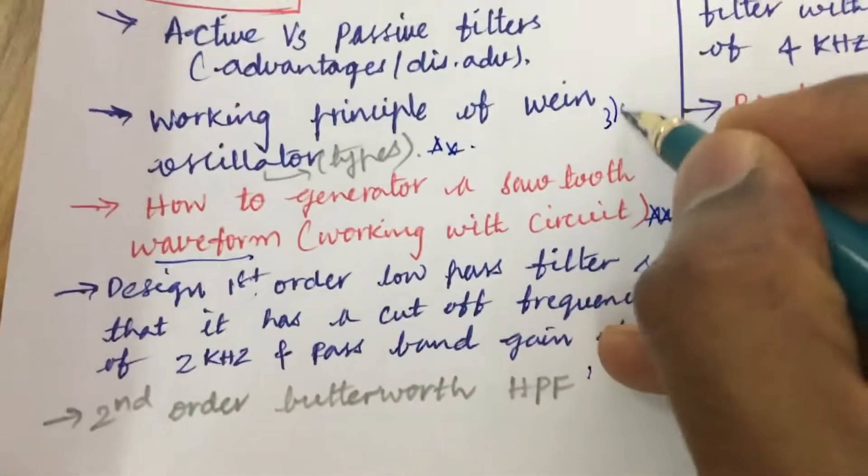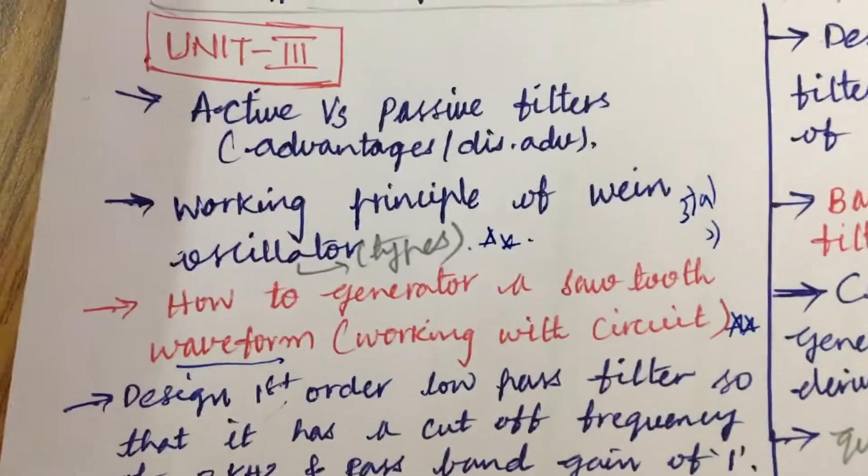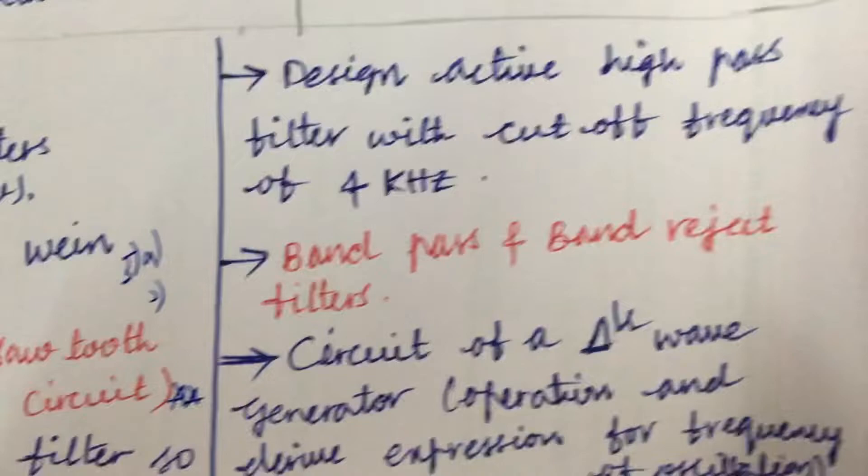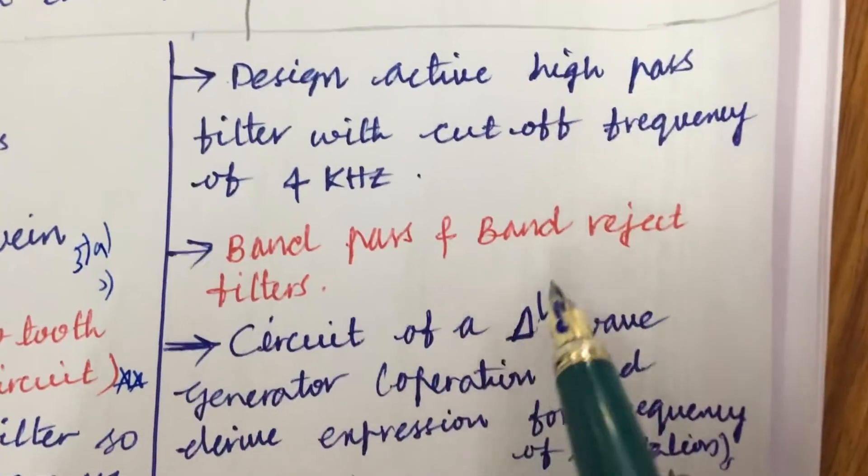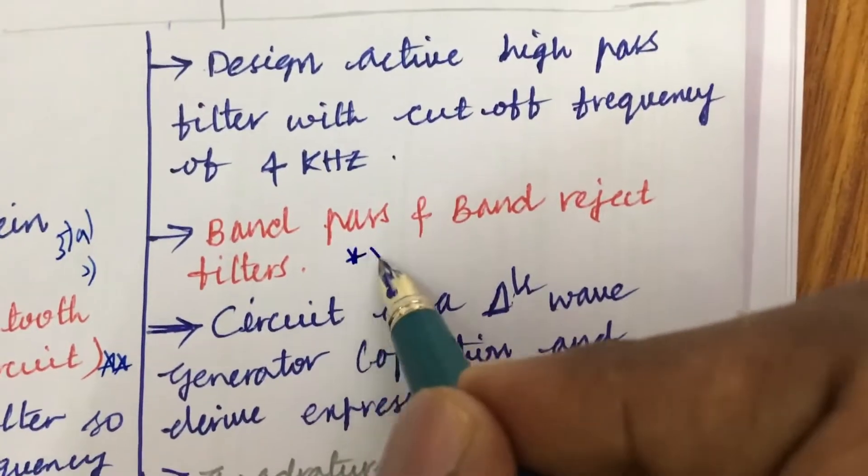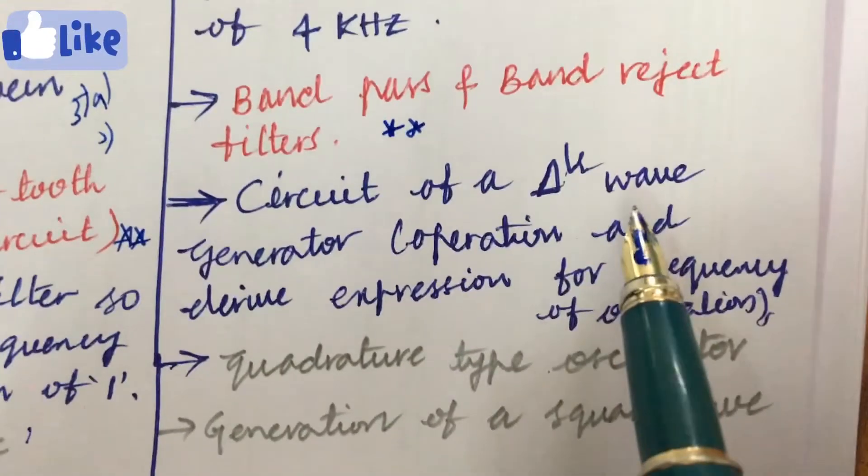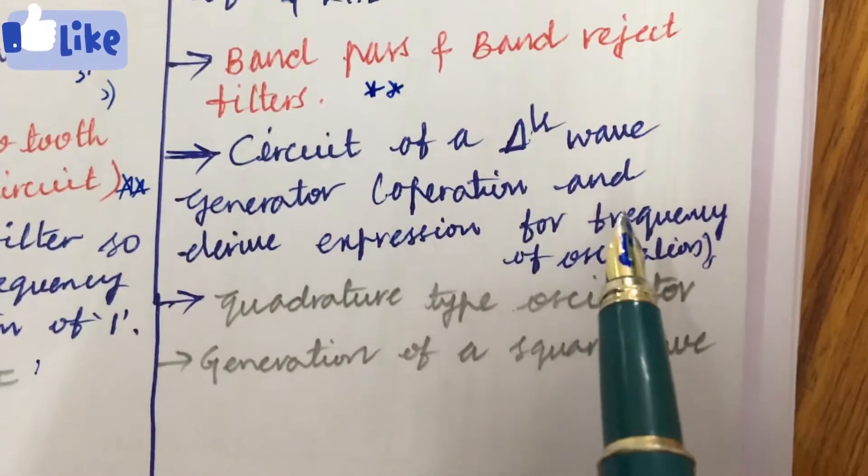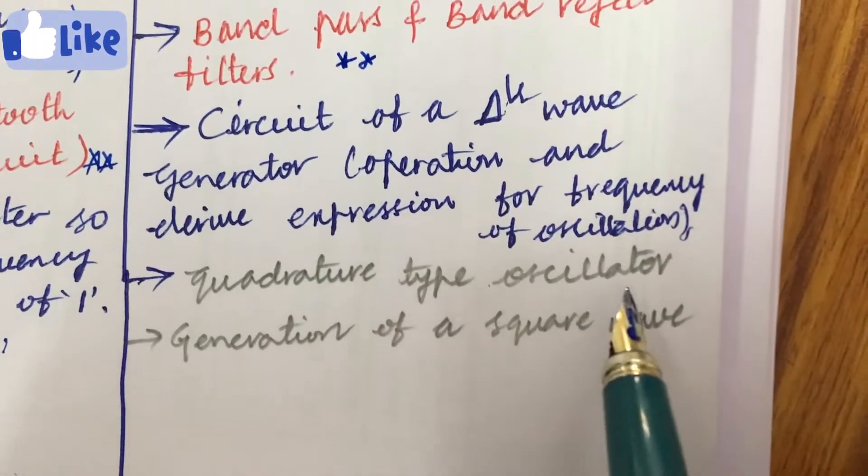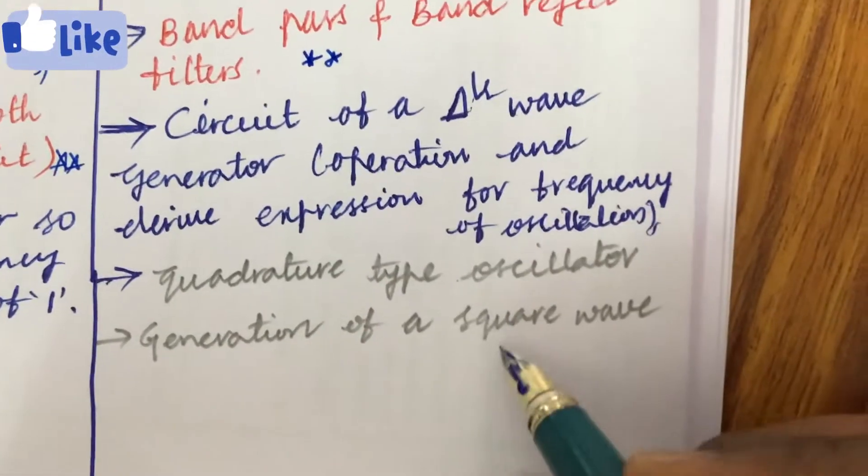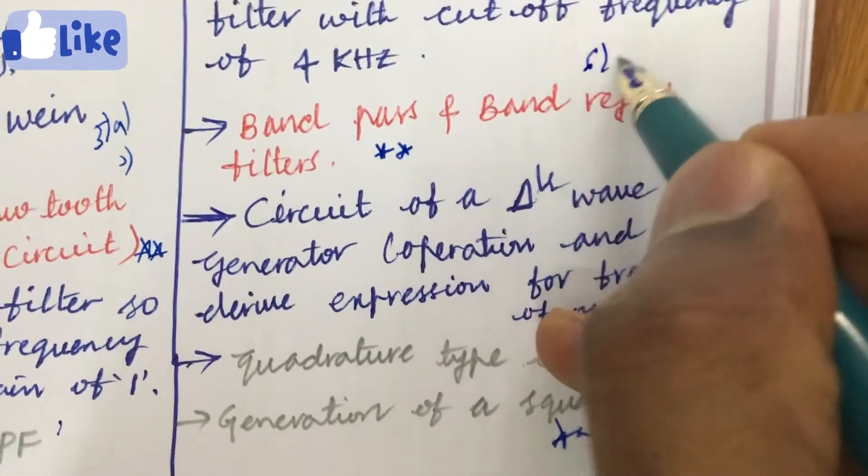From this part you will be getting 5A as well as 5B which is under third unit. Later, design active high pass filter with cutoff frequency of 4 kilohertz and the band pass and band reject filter differences. And write a note on these terms and the circuit of a triangular wave generator and operation as well as derive expression for frequency of oscillation. Quadrature type oscillator, generation of a square wave may be one of the very important questions. From this part we can expect the question as 6A as well as 6B.